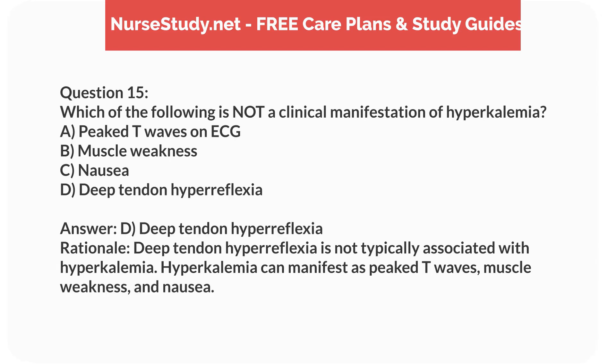Answer: D. Deep tendon hyperreflexia. Rationale: Deep tendon hyperreflexia is not typically associated with hyperkalemia. Hyperkalemia can manifest as peaked T waves, muscle weakness, and nausea.